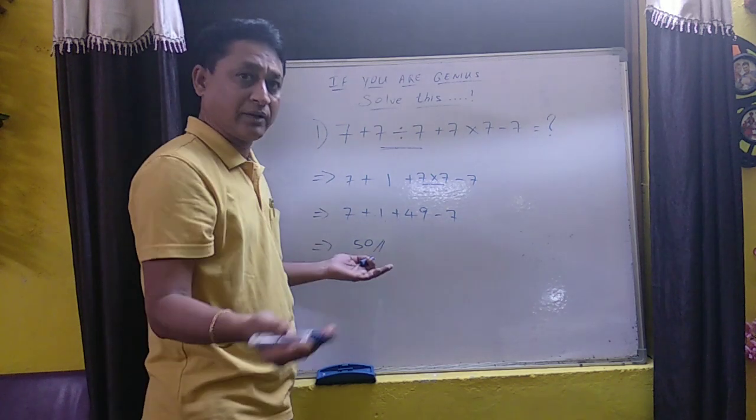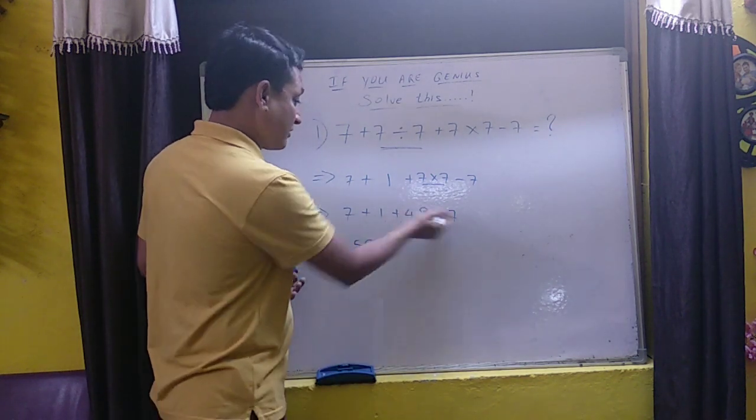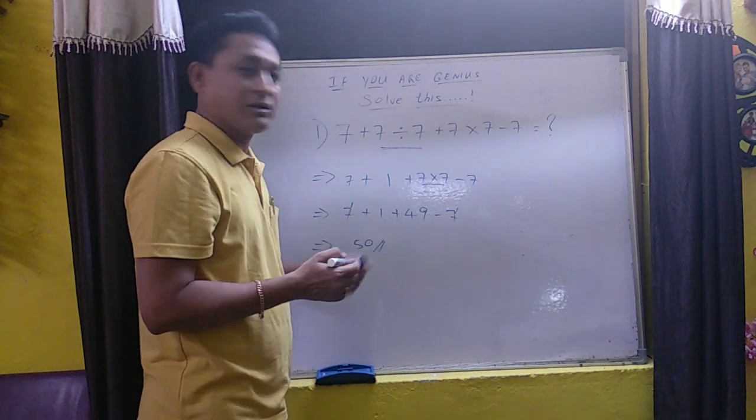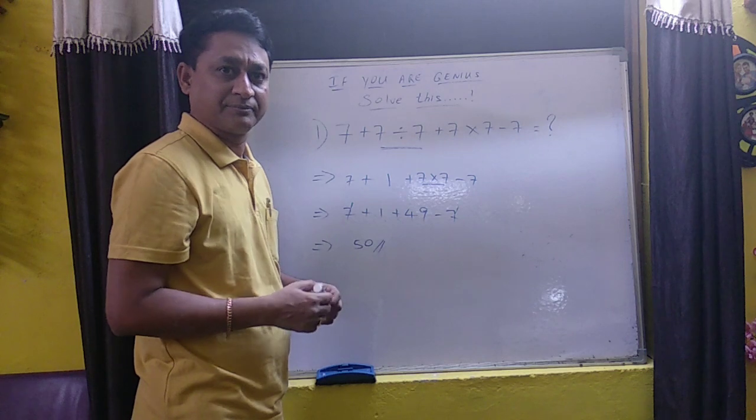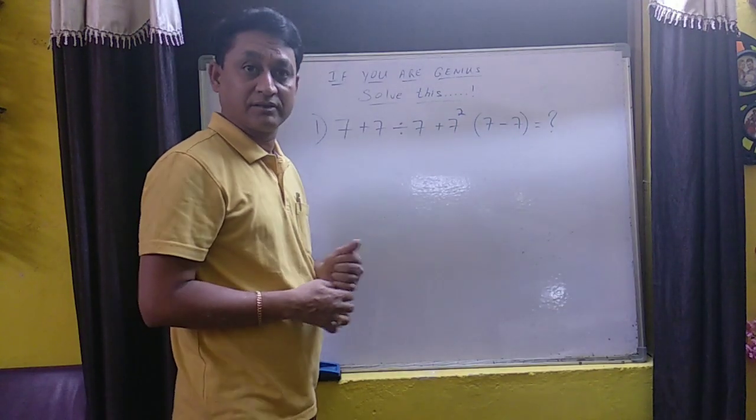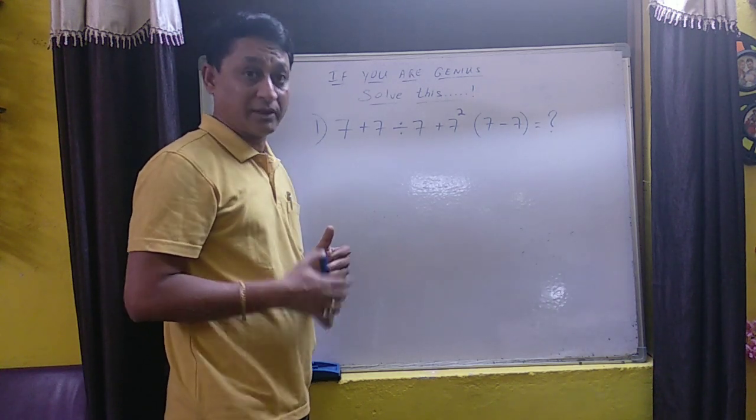Either way you can solve that way or plus or minus 7 gets cancelled and your 49 plus 1 is 50. This is very simple, easy. You have just now seen the sum which we solved. Hope you understood.